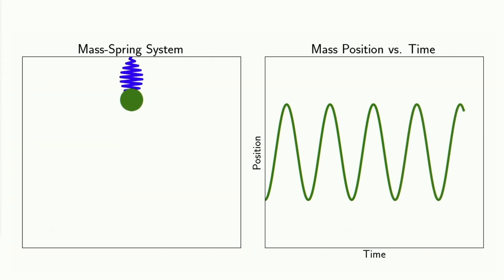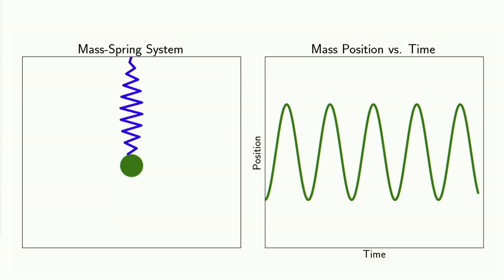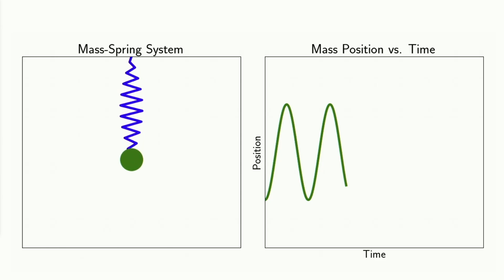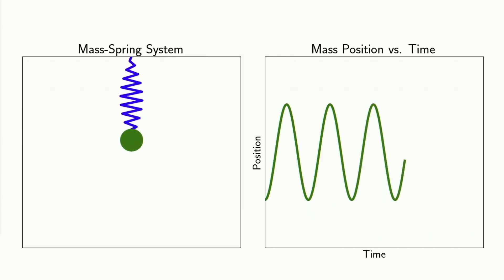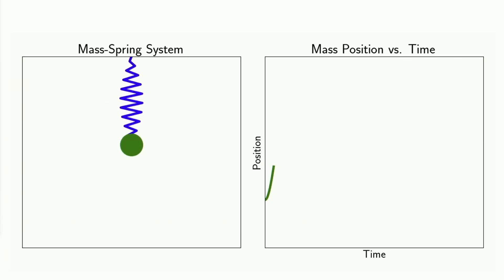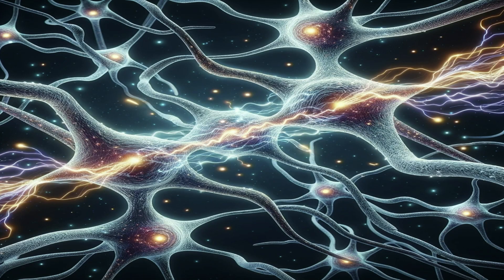If we assume there's no damping and no friction in the system, and we plot the position of the mass as a function over time, we see very beautiful harmonic oscillations emerge. But what does this have to do with artificial intelligence or intelligence in general? It turns out that oscillations are at the very core, at the very center of modern neuroscience.